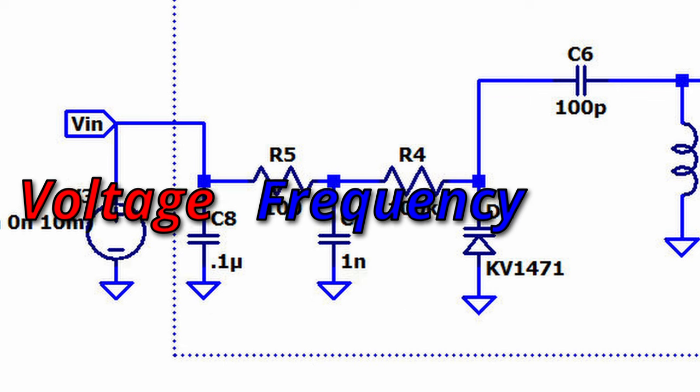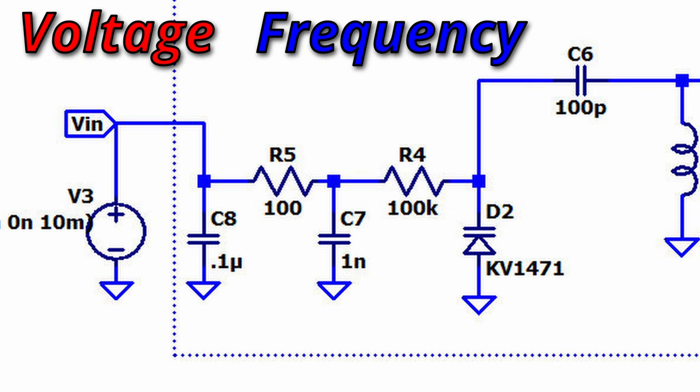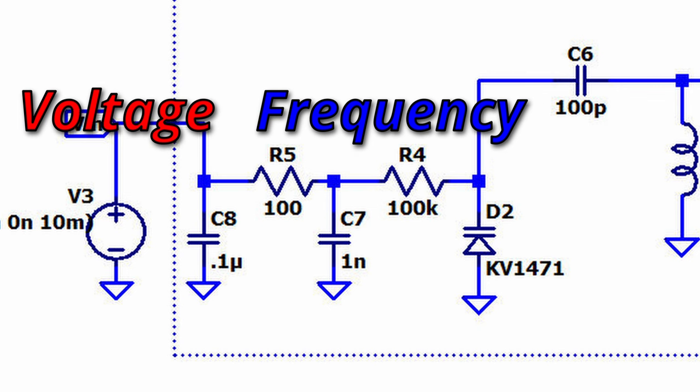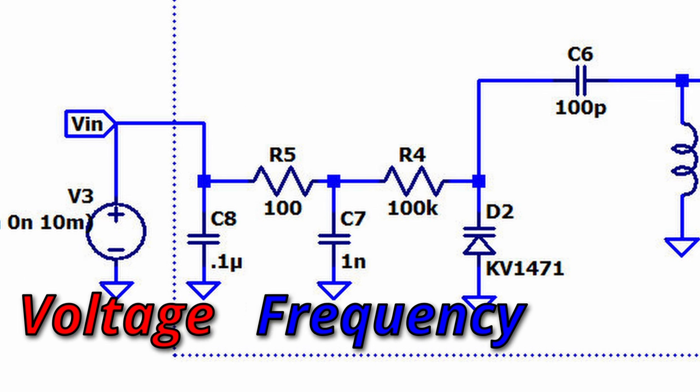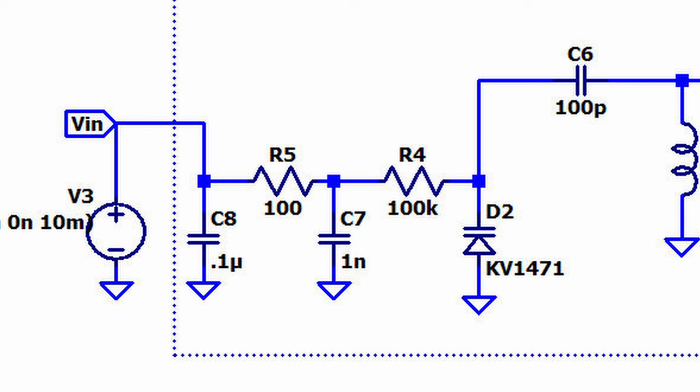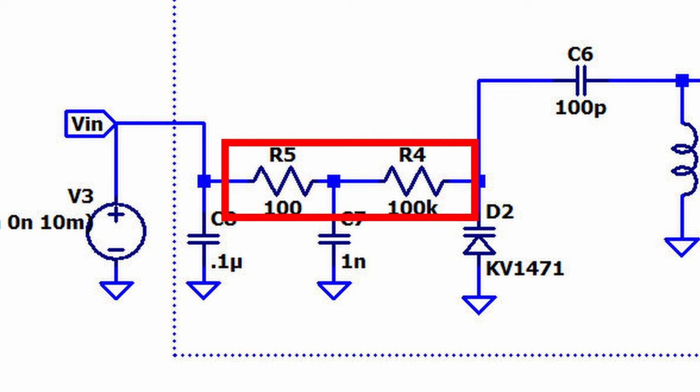So, input voltage up, frequency up. Pretty cool. Conversely, when we decrease the input voltage, the capacitance increases, and the output frequency goes down. So, voltage down, frequency down. Double cool. Now, we isolate the DC control voltage input using either an RF choke or a large value resistance, like I did here.